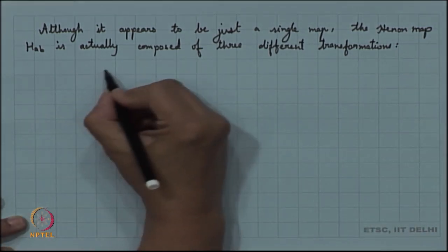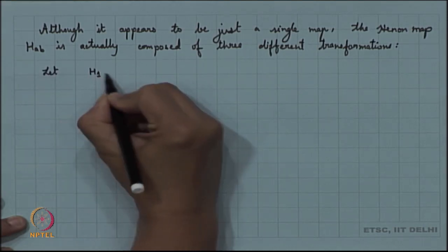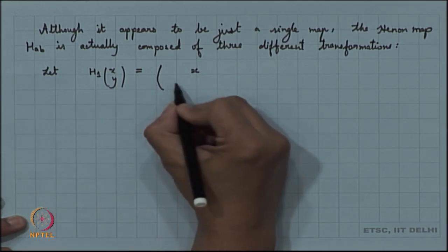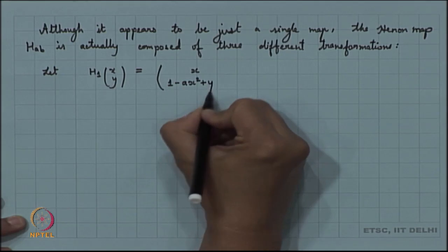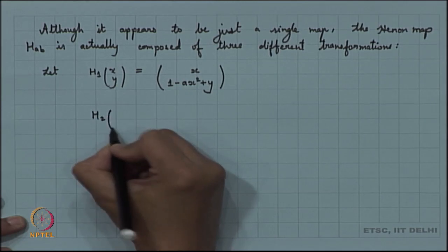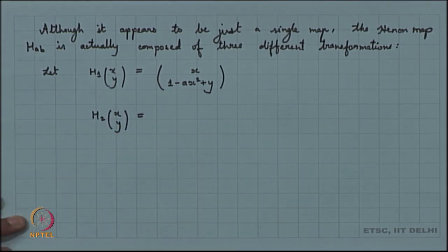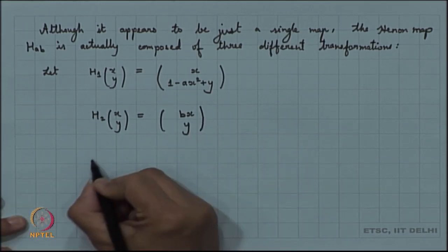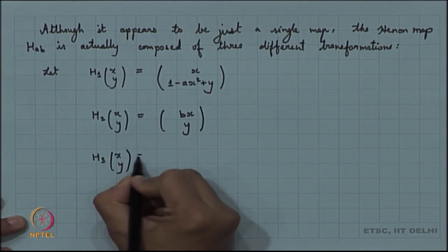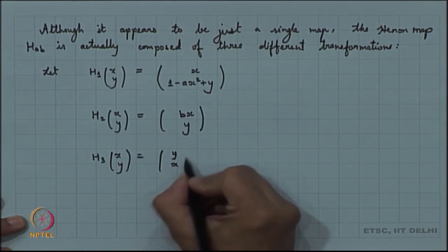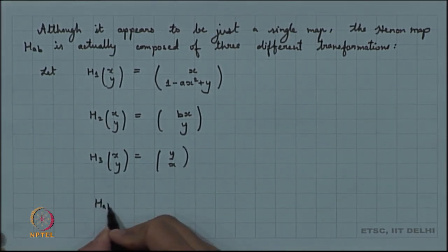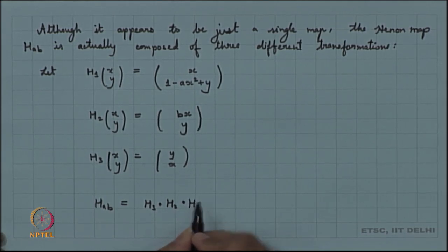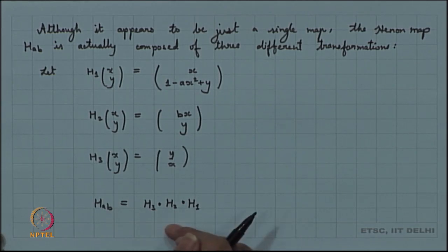The three transformations are: h₁(x, y) = (x, 1 - a·x² + y); h₂(x, y) = (b·x, y); and h₃(x, y) = (y, x), which is inversion or rotation by 90 degrees. You can observe that H_{a,b} is basically h₃ composed with h₂ composed with h₁ — it is h₁ then h₂ then h₃.